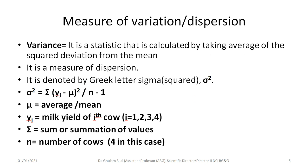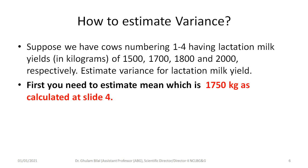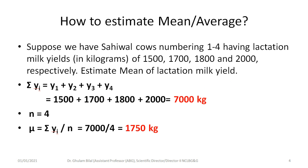Next is variance, a measure of variation or dispersion. It is defined as the average of the squared deviations from the mean. It is denoted by the Greek letter sigma squared. Its formula is: sigma squared equals the sum of (yi minus mu) squared divided by (n minus 1), where mu is the average, yi is the milk yield of any cow, sigma is summation, and n is number of cows. Using the same four cows, the mean we already estimated is 1750 kilograms.